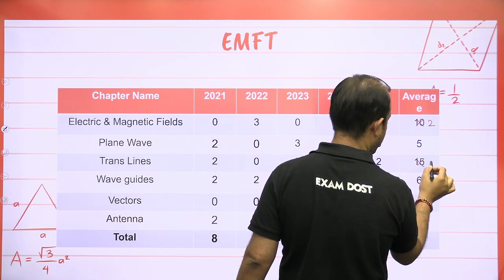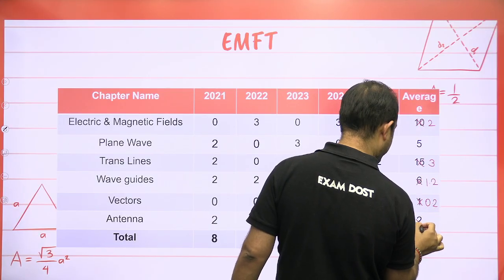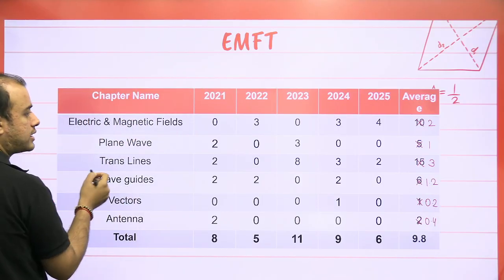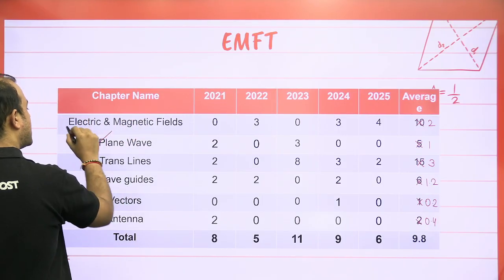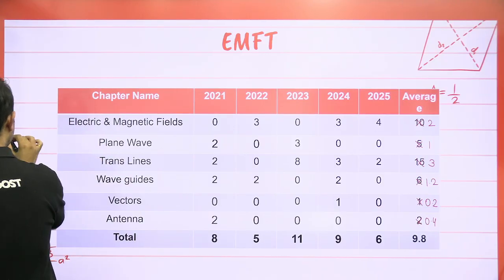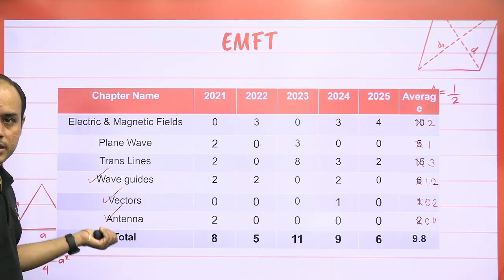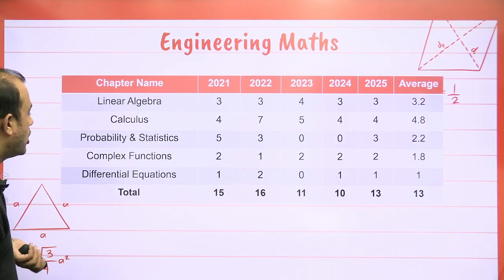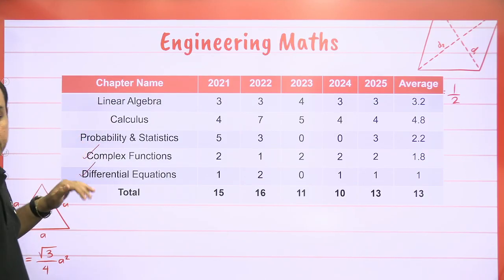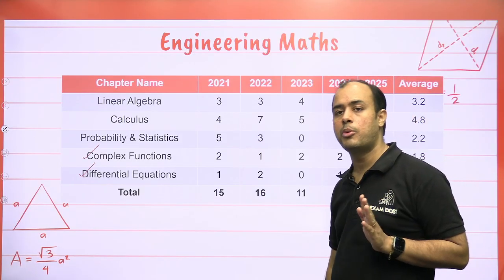In EMFT for ECE, the weightage is roughly 2-3 marks total. Cover Plane Waves, the basic concepts, and Transmission Lines — these three things you must cover. The rest of the topics like Waveguide, Antenna, and Vector Analysis you can skip, as Vector Analysis will be covered under Maths. In Mathematics for ECE, skip Complex Analysis and Differential Equations; cover the three units of Mathematics, and ECE students should also cover Multiple Integration, which is important from the ECE point of view.